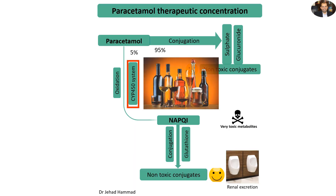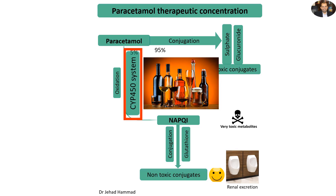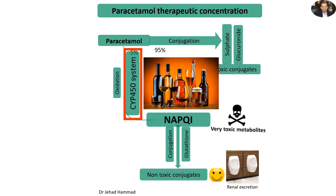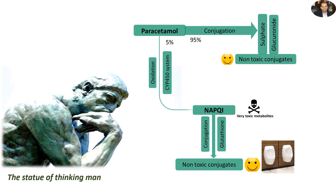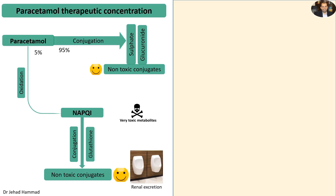It is worth noting that alcohol enhances the activities of CYP450 isozymes. Therefore, alcohol produces larger amounts of NAPQI even at therapeutic concentrations of paracetamol. Another explanation for the toxic potential of paracetamol at therapeutic doses in some people is attributed to the glutathione conjugation system.